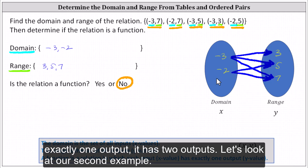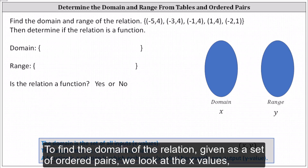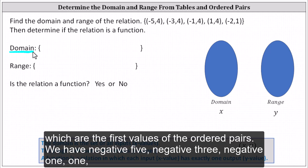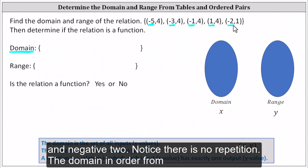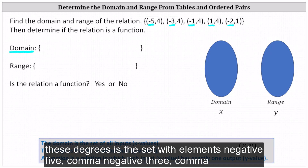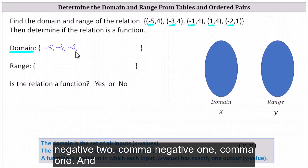Let's look at our second example. To find the domain of the relation given as a set of ordered pairs, we look at the x values, which are the first values of the ordered pairs. We have negative five, negative three, negative one, one, and negative two. Notice there is no repetition. The domain, in order from least to greatest, is the set with elements negative five, negative three, negative two, negative one, one.